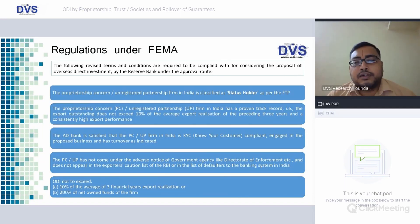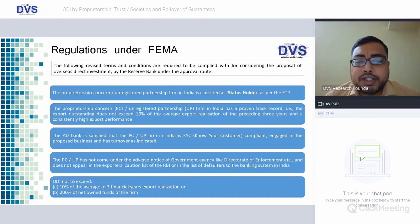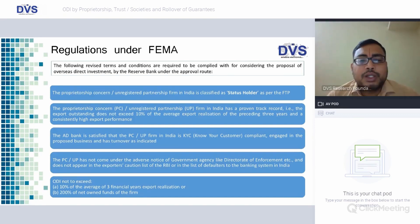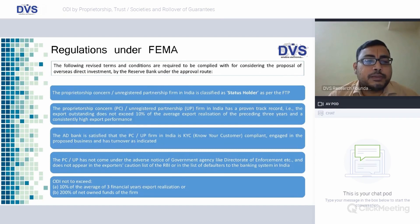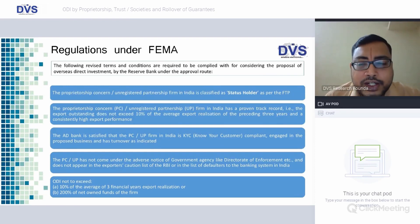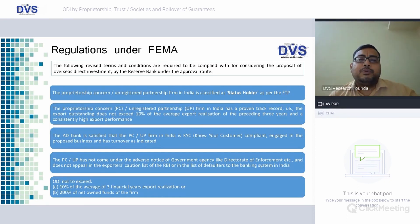If you recollect, in the first session we discussed the definition of 'Indian Party,' which includes companies registered under the Companies Act, partnership firms, LLPs, and any other entity notified by the Reserve Bank of India. The definition of Indian Party does not cover an unregistered partnership. Hence it will come under Regulation 19A, where both the proprietary concern and the unregistered partnership firm have to comply with specified conditions to apply under the approval route.